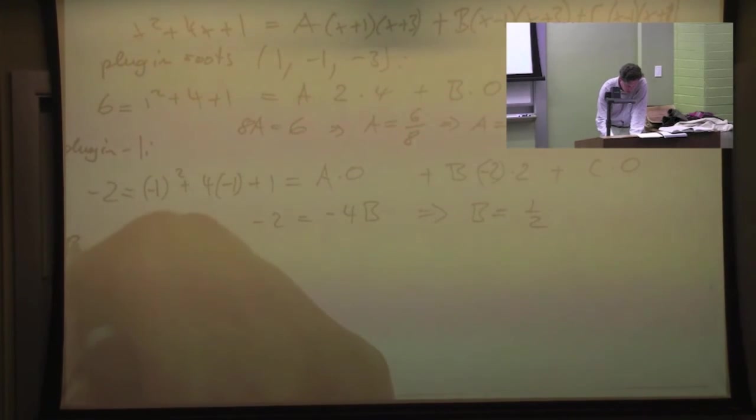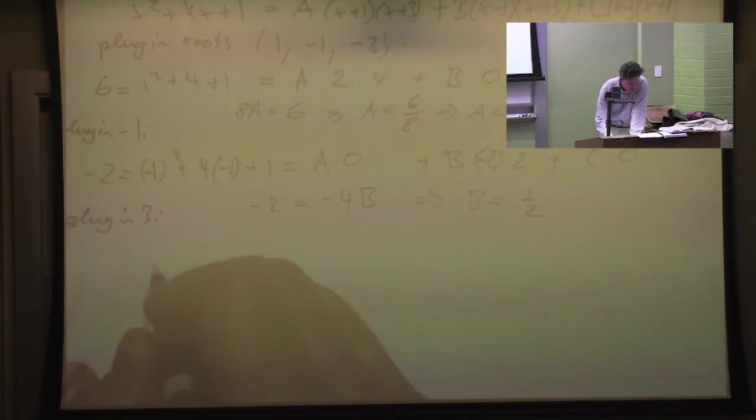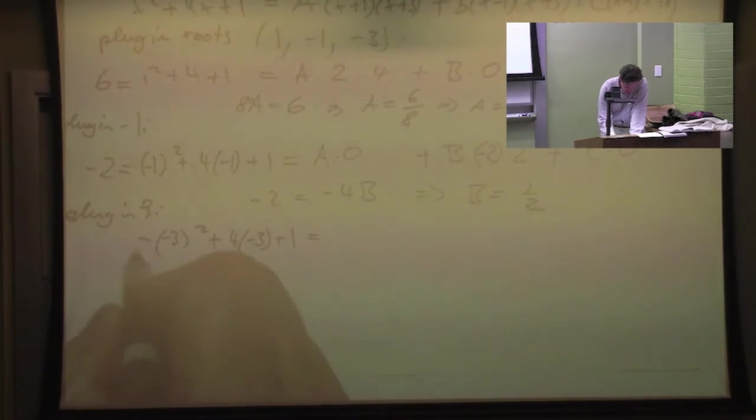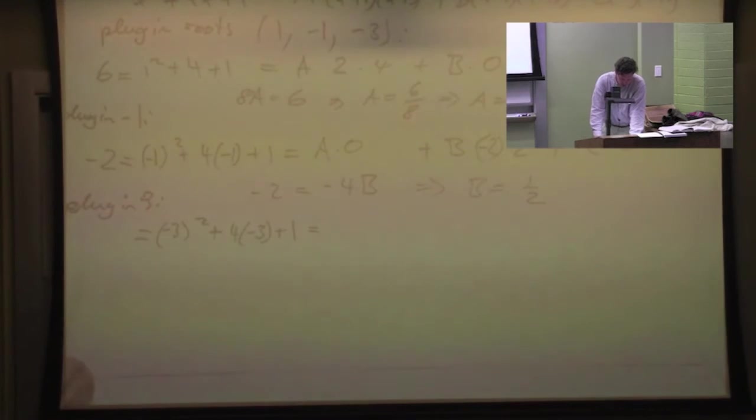And then let's do it one more time. Plug in negative 3. Negative 3, so you get negative 3 squared, 4 times negative 3 plus 1. 9, 10, minus 12, minus 2. Is that right?